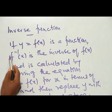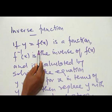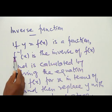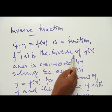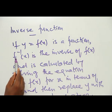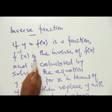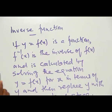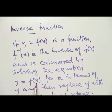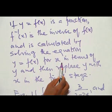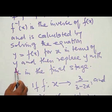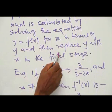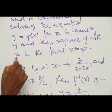Inverse function: if Y = F(S) is a function, then F⁻¹(S) is the inverse of F(S). It is calculated by solving the equation Y = F(S) for S in terms of Y, and then replacing Y with S in the final stage.